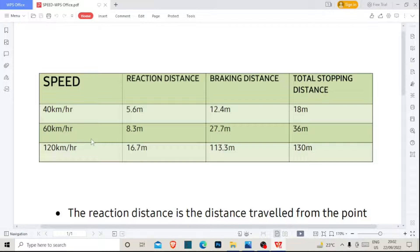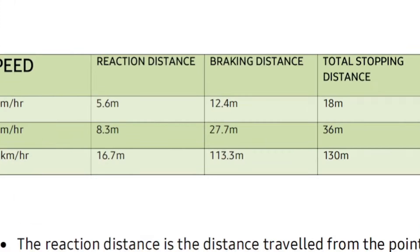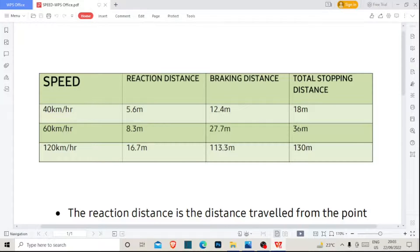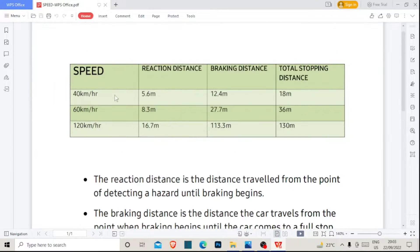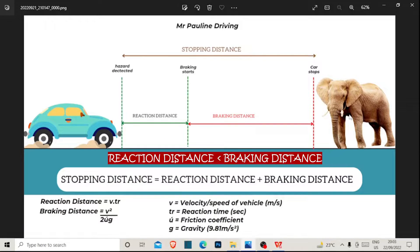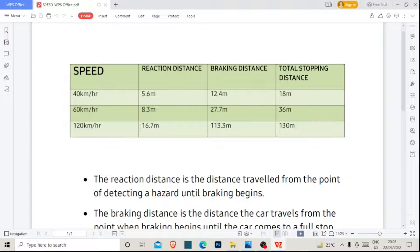All you need to know is the reaction distance for each speed — for example, at 60 km/h it is 8.3 meters. Looking at this table clearly: as speed increases, the reaction distance and braking distance also increase, and the total stopping distances are 18, 36, and so on. Also important to understand: the reaction distance is always less than the braking distance, as you can see from this diagram.